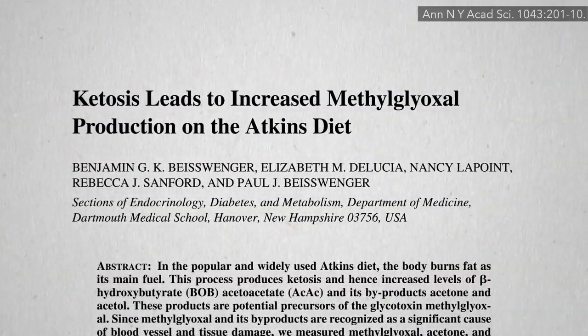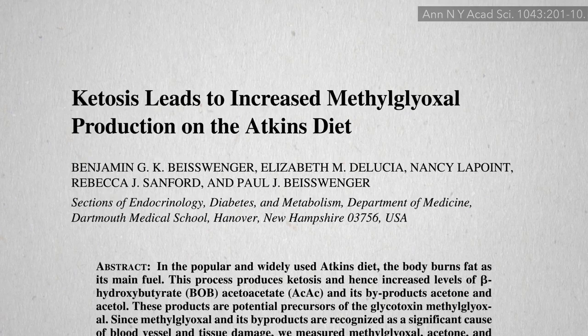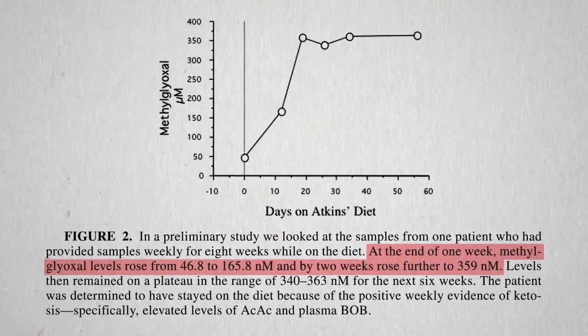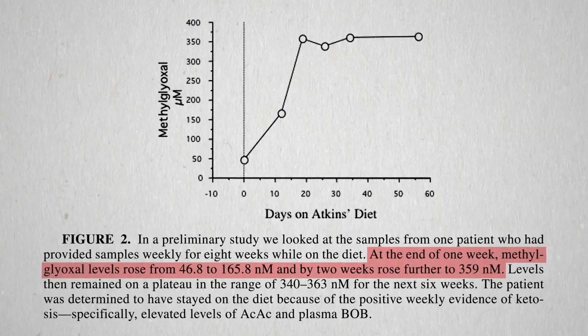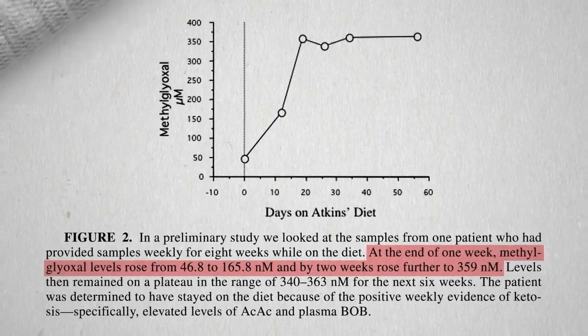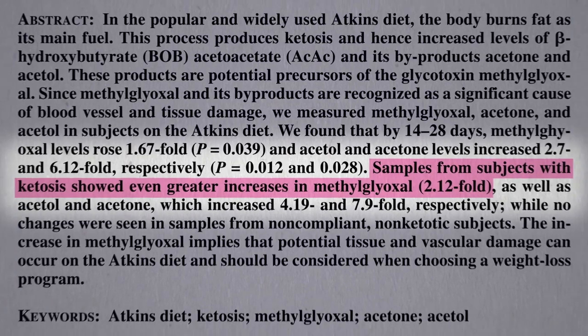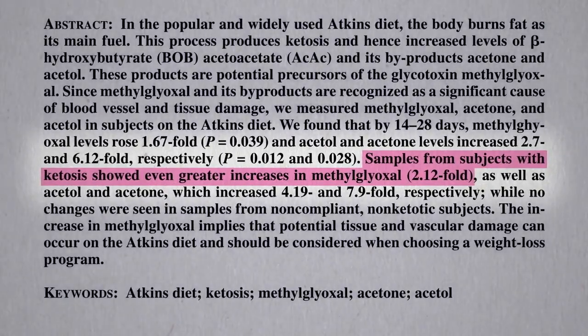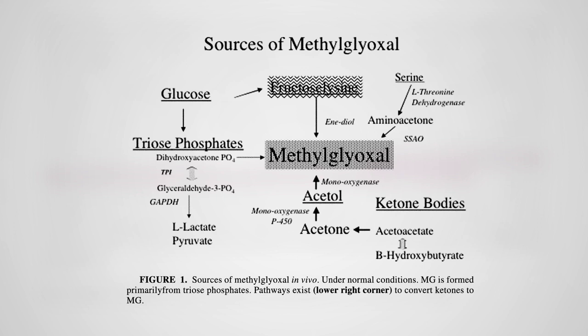Dartmouth researchers were surprised to find more methylglyoxal though. A few weeks on the Atkins diet led to a significant increase in methylglyoxal levels. And those in active ketosis did even worse, doubling the level of this glycotoxin in their bloodstream. It turns out high sugars may not be the only way to create this toxin.